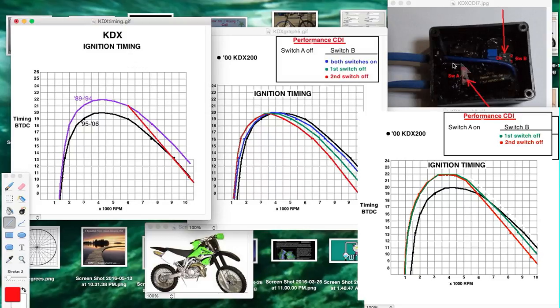Let me explain something real quick. Switch A is basically setting the timing curve close to stock or more advanced. Switch B is to give you three different timing curves, more and more retarded with the advancing RPM.